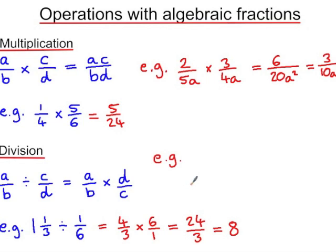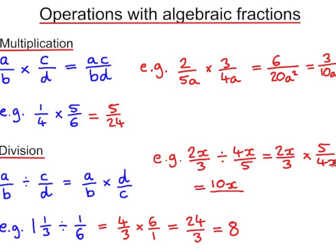So we use the same process with algebra. 2x over 3 divided by 4x over 5 is the same as 2x over 3 multiplied by 5 over 4x. And if we multiply the numerators together, 2x times 5 is 10x. And 3 times 4x is 12x. And this simplifies. We can divide the numerator and the denominator by 2x to leave us with 5 over 6.